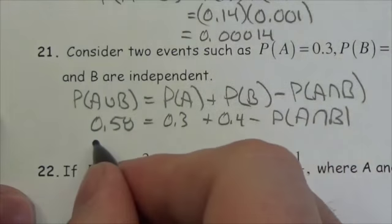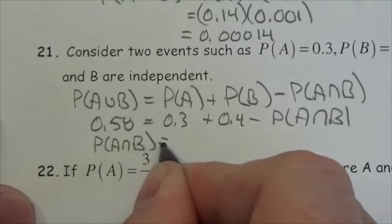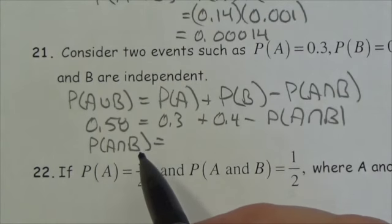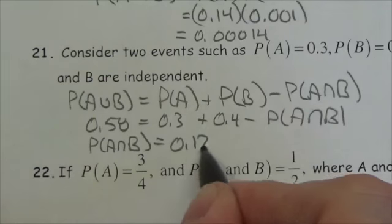So now I'll bring stuff over here. So the probability of A and B is going to equal, that's going to be 0.3 plus 0.4 minus 0.58. So 0.12.